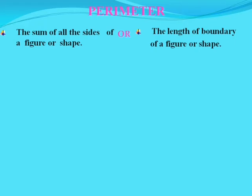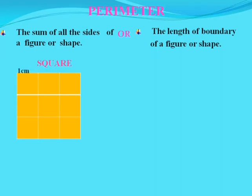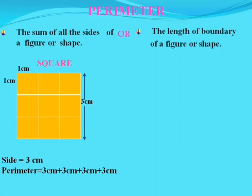Let's find out the perimeter of a square which has many smaller squares, where each small square has a side of 1 cm. So the side of this whole square is 3 cm. Therefore, the perimeter equals 3 cm + 3 cm + 3 cm + 3 cm, which becomes 12 cm.